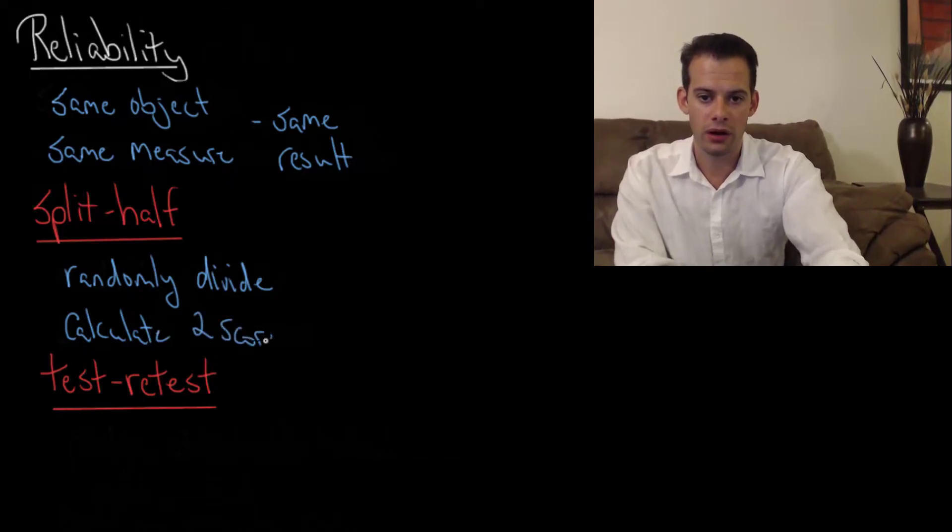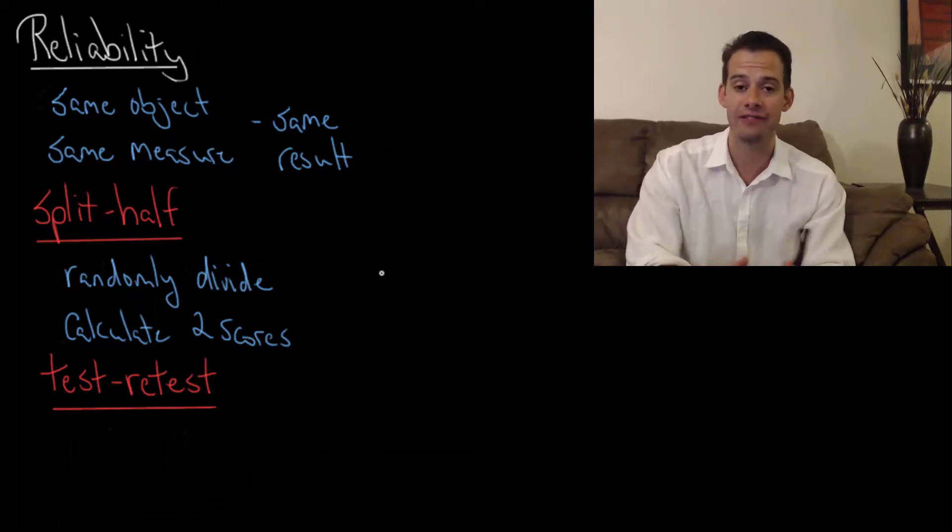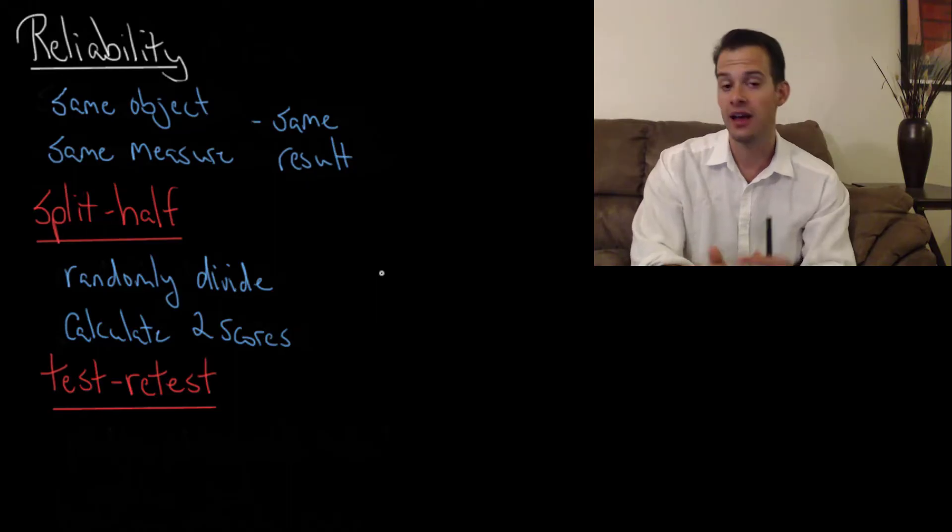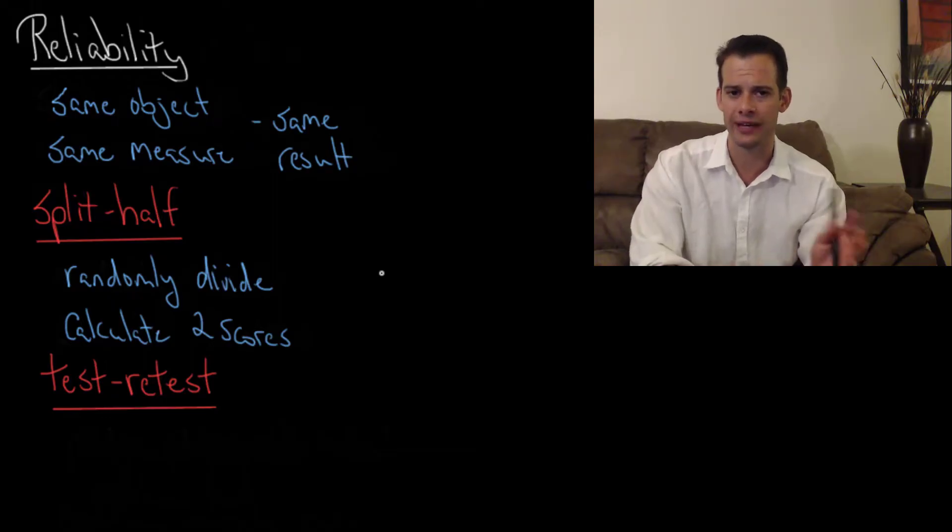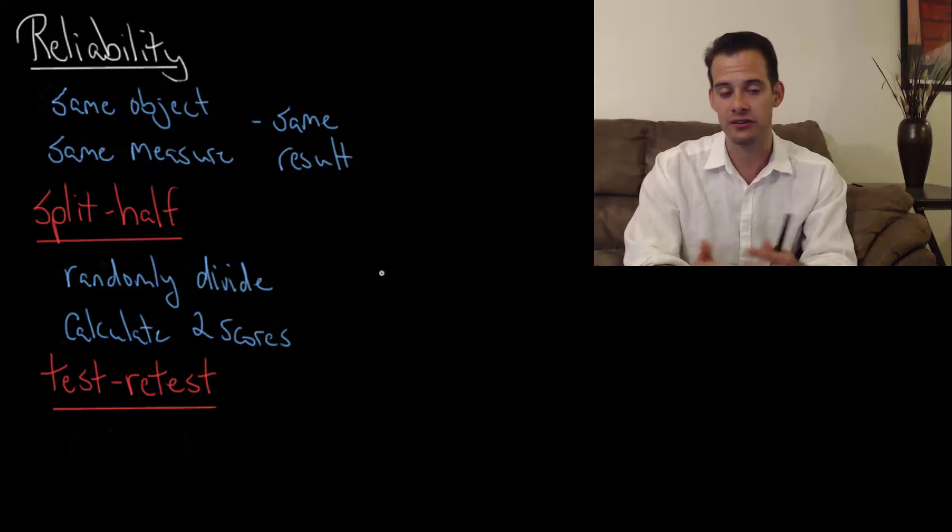And so what should be the case is that you should get roughly the same score on each half of the test. If you get drastically different scores on the two halves of the test then that means I might need to look at this test more closely. I might need to reconsider some of the questions. Why is it that you would get a much higher or much lower score on one half? Which questions were in there? Maybe I should find a way to balance that out. Maybe I need to remove some questions. Maybe I need to add some other types of questions onto my assessment. So that's split half reliability.